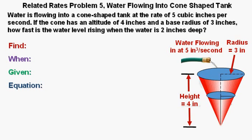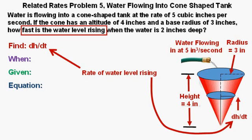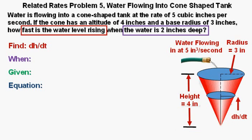And here we have our organization elements: find, when, given, and the equation. What are we asked to find? Well, how fast the water level is rising in the tank. And we'll call this rate of the water level rising dh/dt. Since the other units used are inches and seconds, these units should also be inches per second.